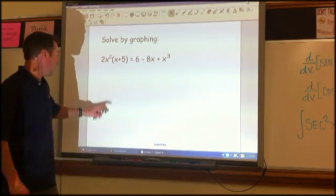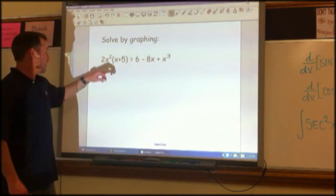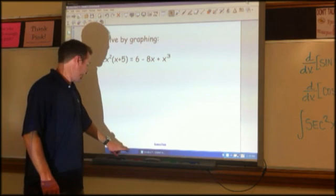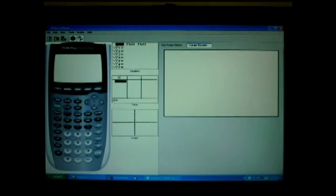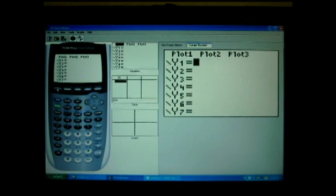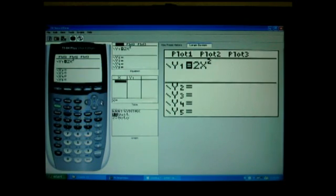So I've got a calculator on here. I've got 2x squared times x plus 5, and what I'm going to do is in the Y equals part, I'm going to put that. 2x squared times x plus 5.